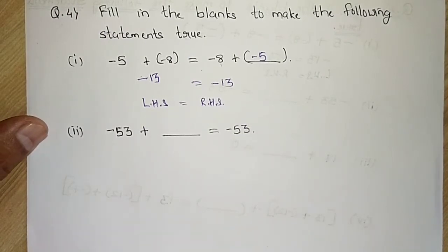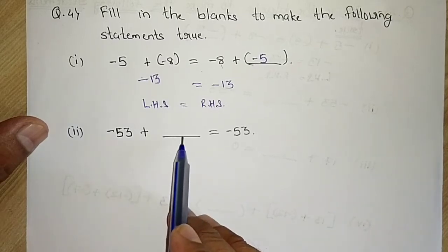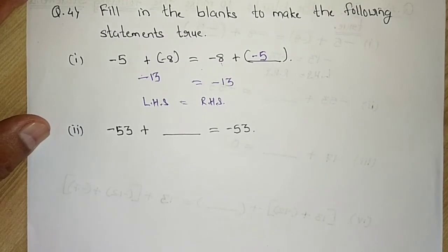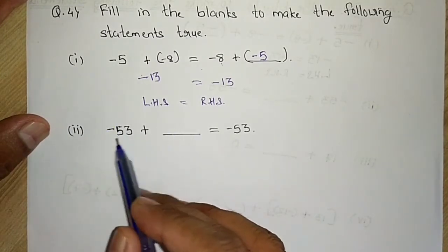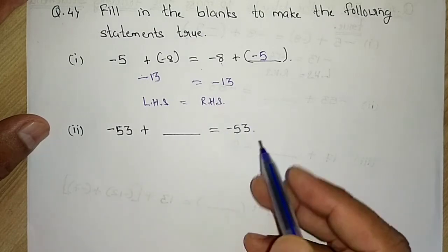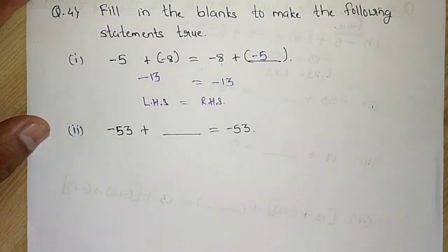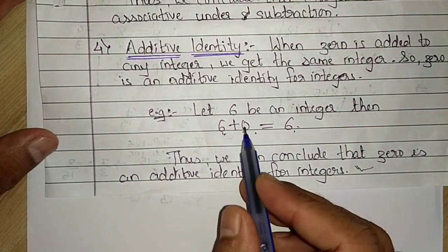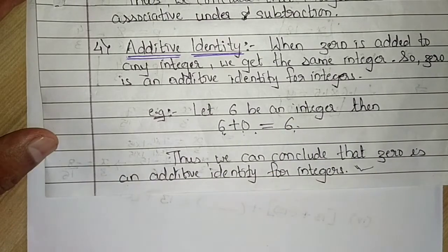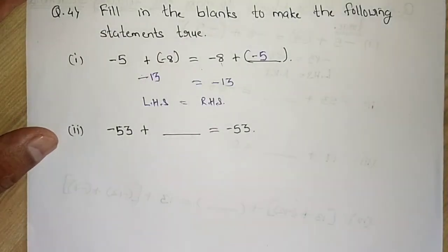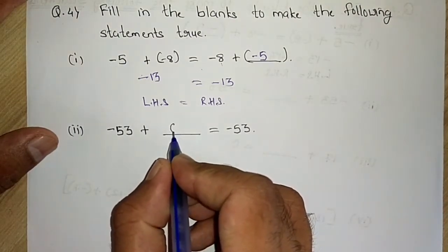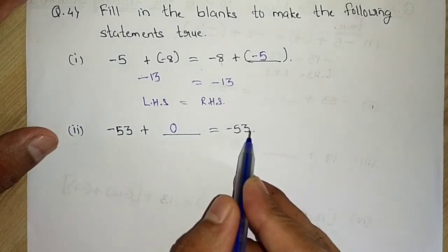The second blank is: minus 53 plus ___ equals minus 53. We have to add a number such that the result is still minus 53. We apply the additive identity for integers — adding 0 to any number gives that same number. So minus 53 plus 0 equals minus 53, and the answer is 0.